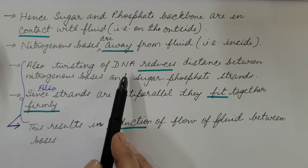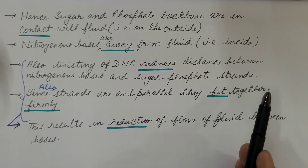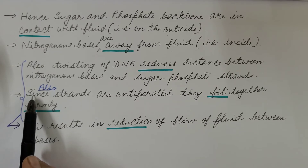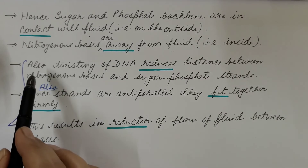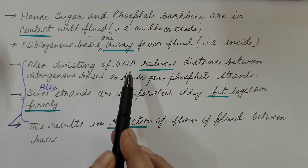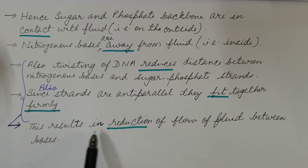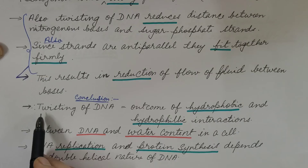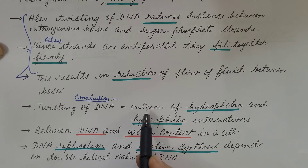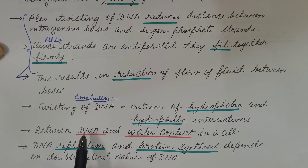Also, when DNA twists, it reduces the distance between the nitrogenous bases and the sugar-phosphate strands. Since the strands are antiparallel, they fit together firmly. Due to this twisting and firm fitting of antiparallel strands, it results in a reduction of the flow of fluid between the bases. We can conclude that the twisting of DNA is the outcome of hydrophobic and hydrophilic interactions between the DNA molecule and the water content of the cell.